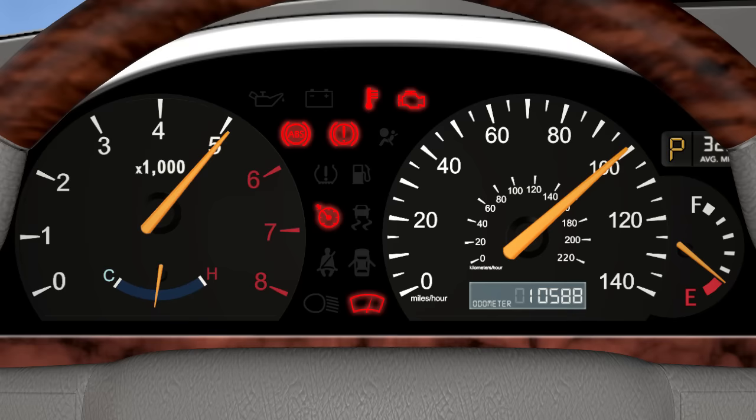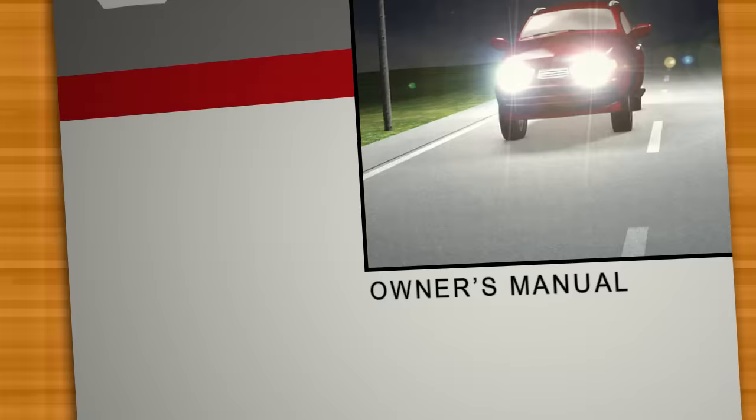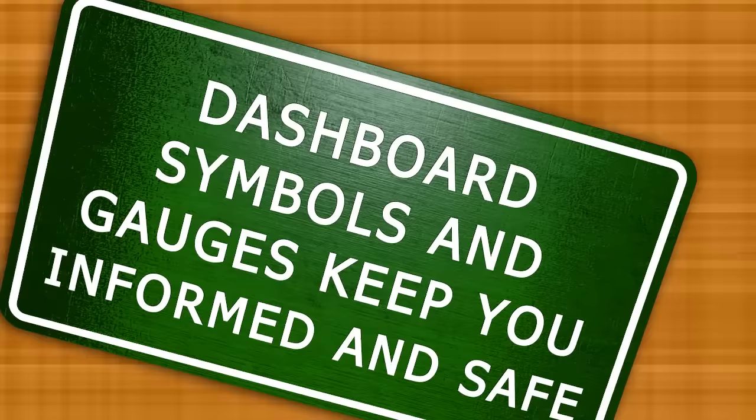All of these gauges, symbols, and indicators are designed to communicate with you, the driver, and inform you what is happening with the various systems of your vehicle. Since there are so many makes and models of vehicles, these items will be slightly different on your vehicle. Check your vehicle's owner's manual for more detailed information about each symbol, indicator light, and gauge that your vehicle is equipped with. Recognizing and addressing the communication made by your vehicle will help keep you and your passengers safe.